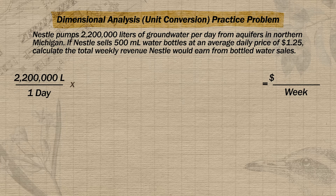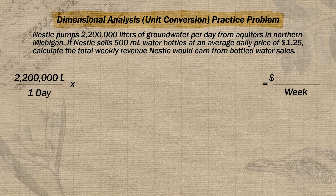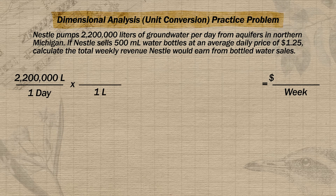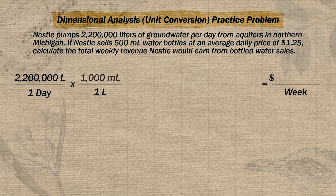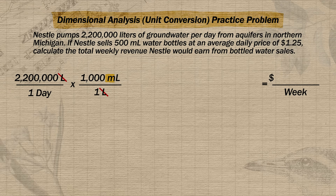Now we keep plugging in conversion factors until we get from liters per day to dollars per week. Our next step is to convert liters to milliliters. Since liters is on top in our initial ratio, we put 1 liter on the bottom of our conversion factor and 1000 milliliters on the top. This lets us cross off liters, and we're now working with milliliters per day.